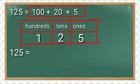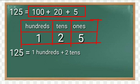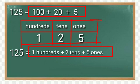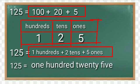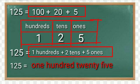Now we can write this number in this way also: one hundreds plus two tens plus five ones. This is the expanded form of this number. Now we will write this number in words: one hundred twenty five. Here we have written this number in words.